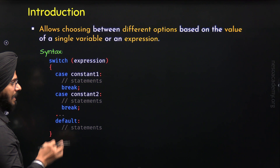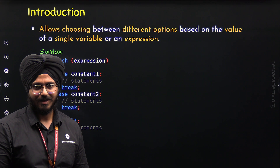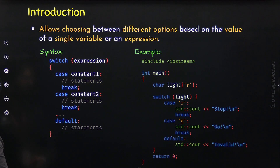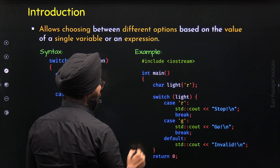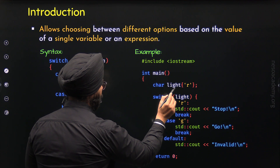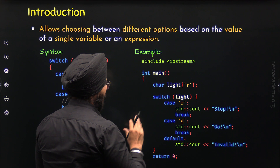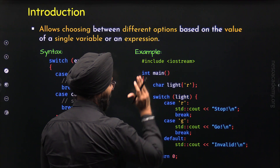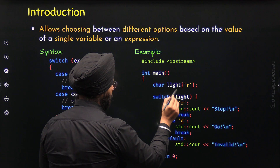So now it is completely clear where we use switch and where we use if-else-if. Let's take an example program to properly understand the implementation of the switch statement. Here I have included the iostream header file, and inside the main function, I have defined variable light of type char with the character 'r'. I am representing this as the traffic light — right now the light is red. This variable is passed to the switch, so this is the switch variable.